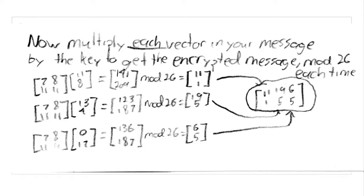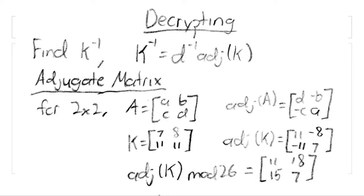Decrypting is slightly more complicated. To find our matrix to use as a key for decoding, we first find the inverse of our original key. This inverse must be found by multiplying the inverse of the original key's determinant by the adjugate matrix.